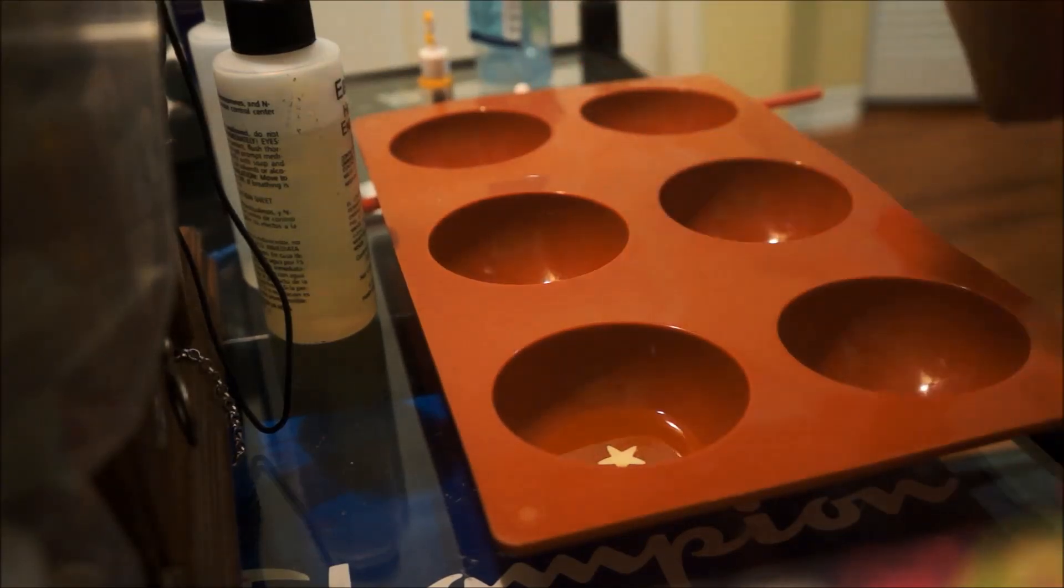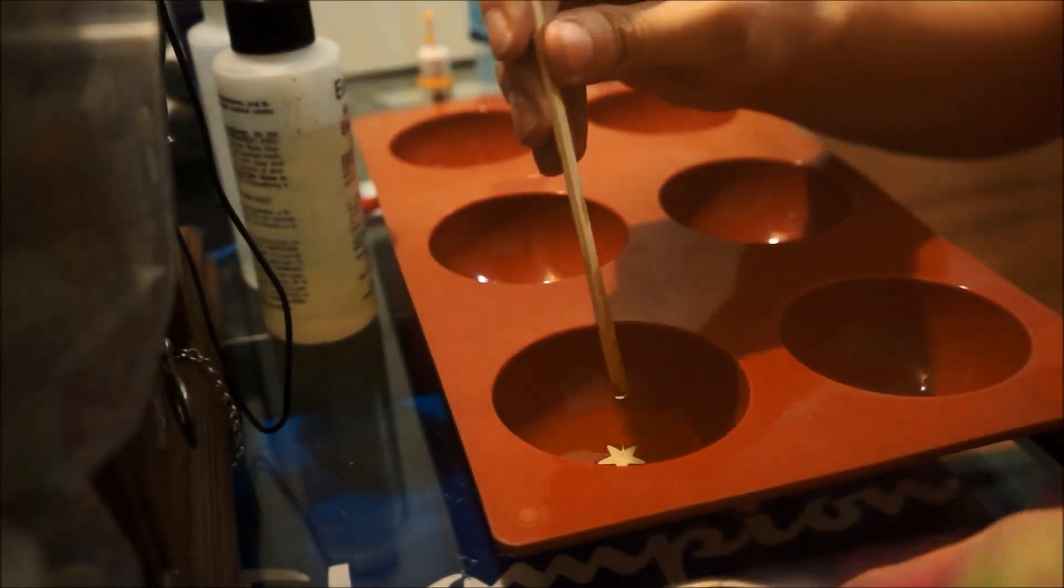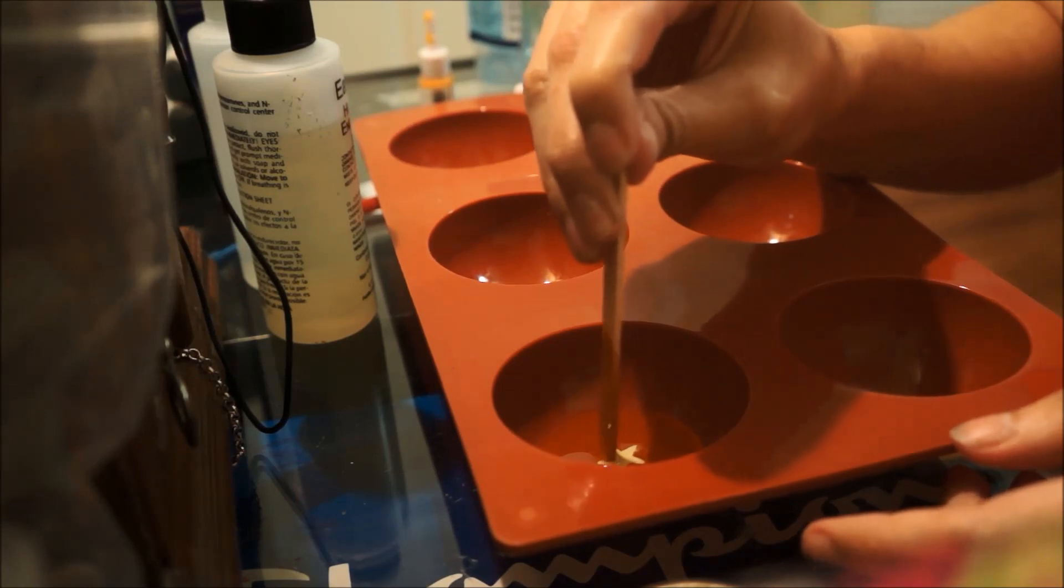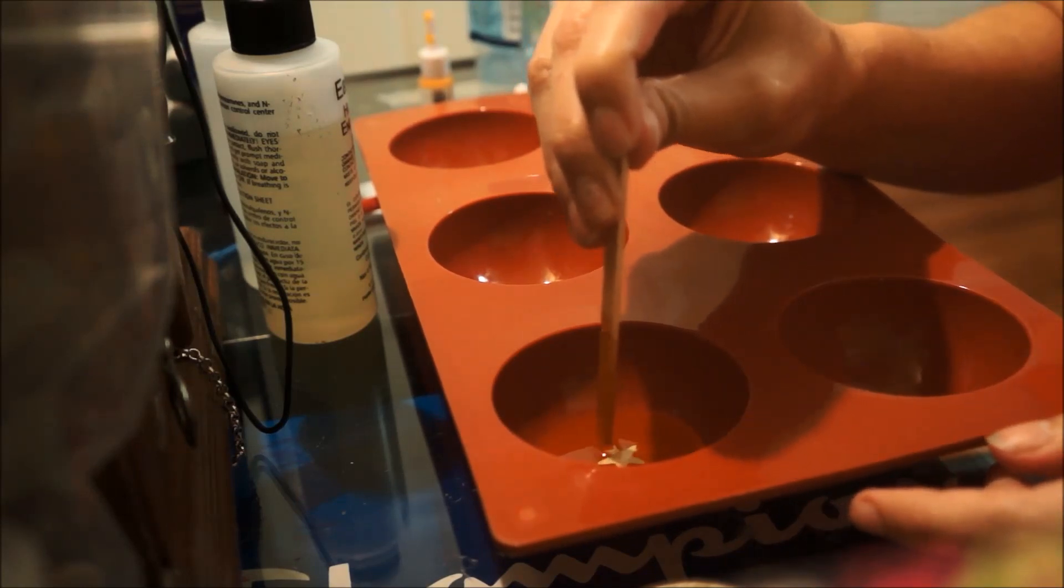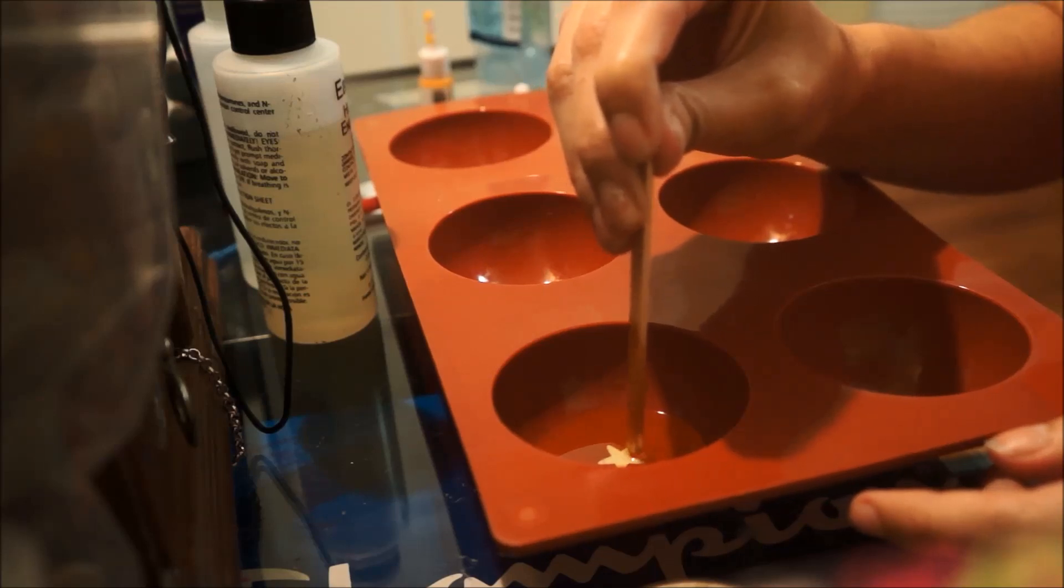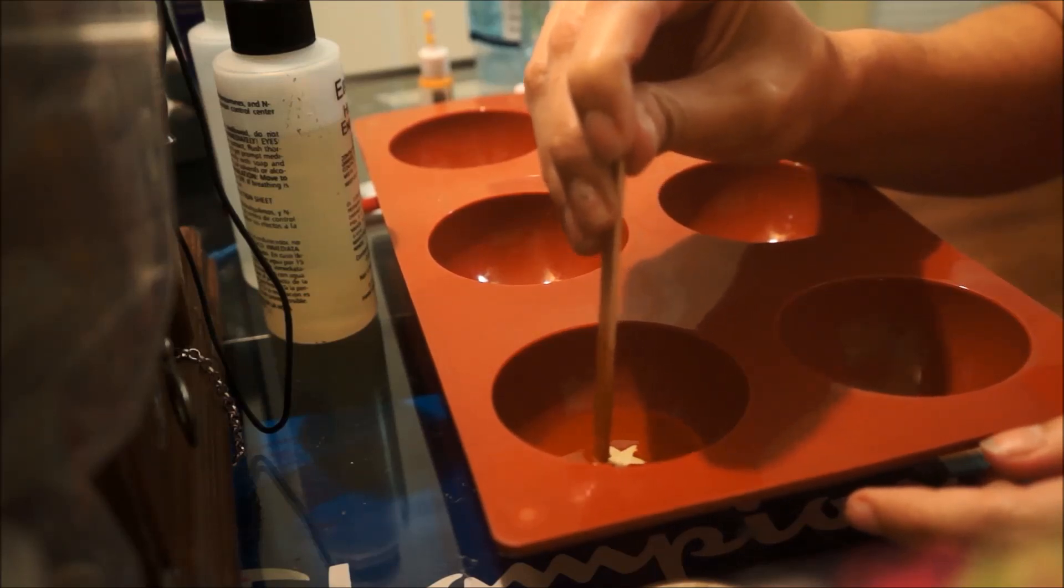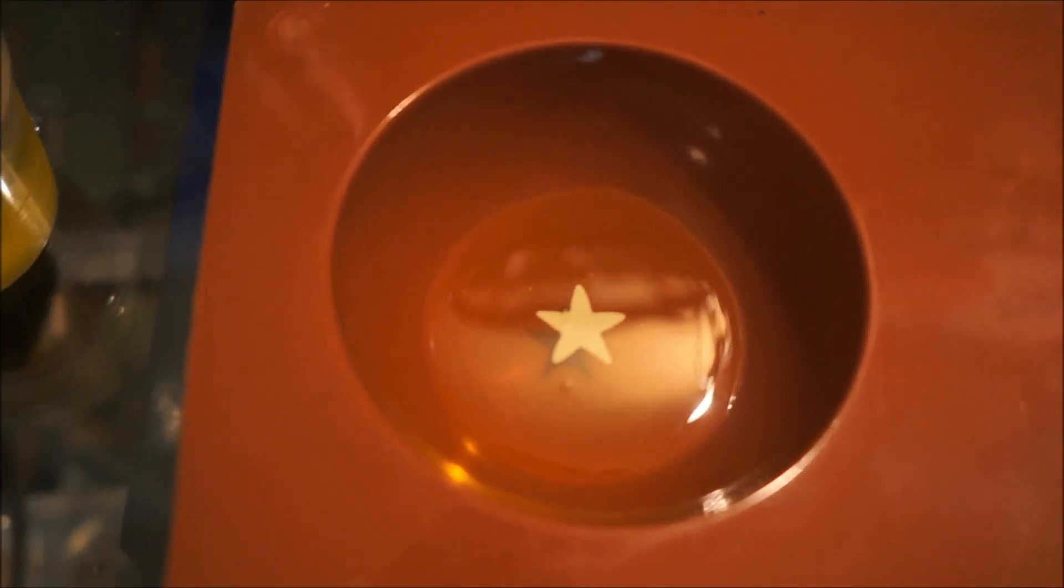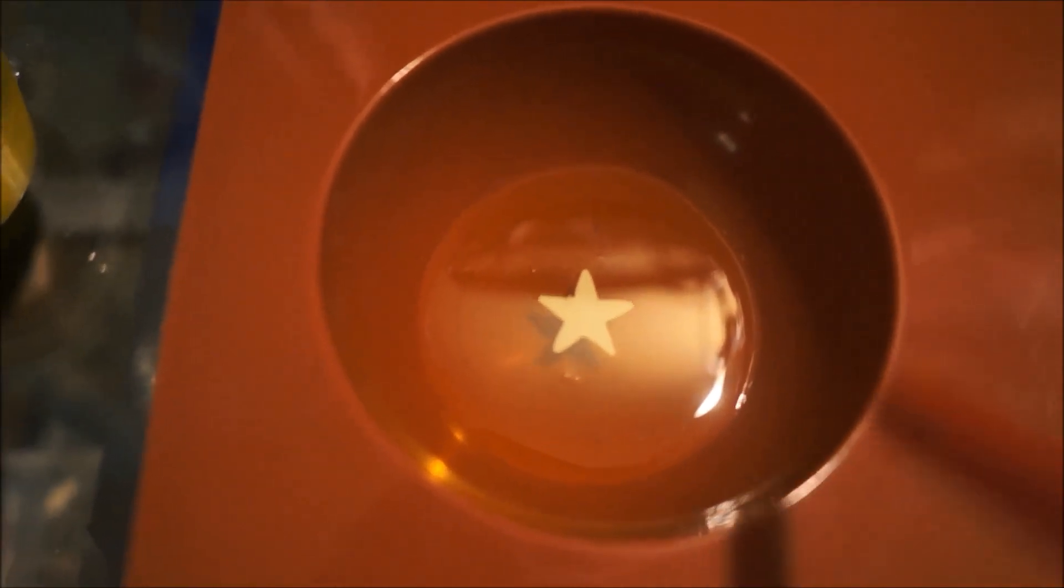I'm going to again blow out the bubbles. Now our sticker may float up since it's not sealed to the bottom. So to prevent that I'm just going to push it down with my popsicle stick. And this also gets any air bubbles that may be trapped from underneath the star. So it should look like this. There's a few bubbles in there that I'm just going to try to blow out.